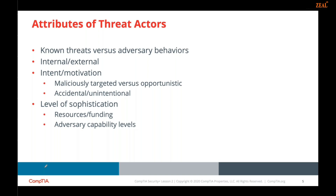Threats can also be accidental or unintentional. Malicious intent and motivation can be contrasted with unintentional threats, which represent accidents, oversights, and other mistakes. So we distinguish between intentional threats — where the attacker has a clear goal and motivation — and unintentional ones.